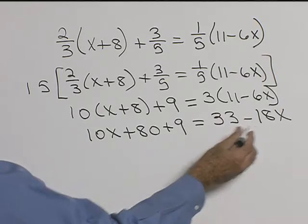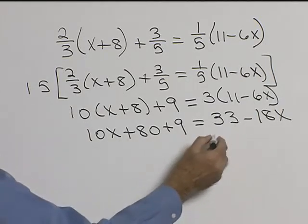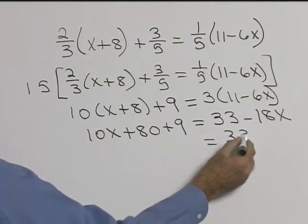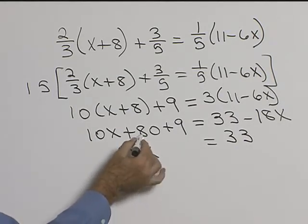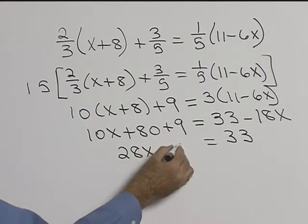Let's add 18x to both sides. If we add 18x on the right side, we're just left with 33. Adding 18x here gives us 28x and we could say 80 plus 9 is 89.